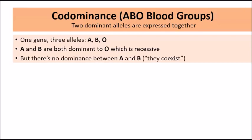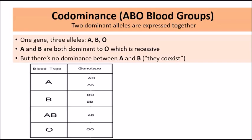There's no dominance between A and B. So if A and B come together, they co-exist and are expressed together. Now let's look at the different possibilities for blood types. There are only four blood types: blood type A, blood type B, AB, and O.